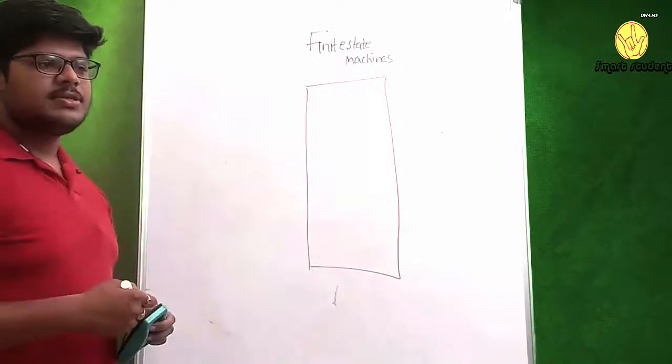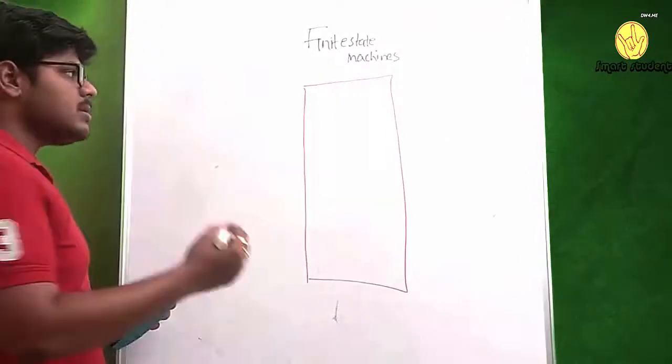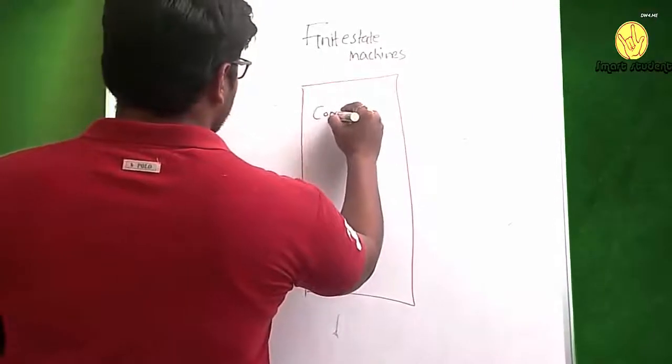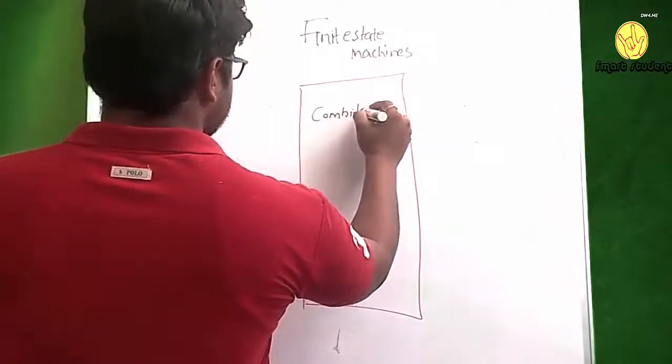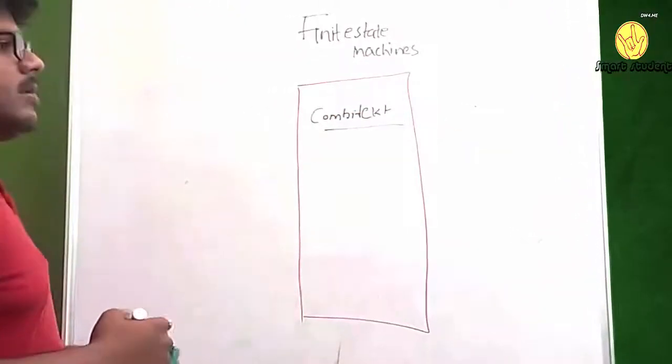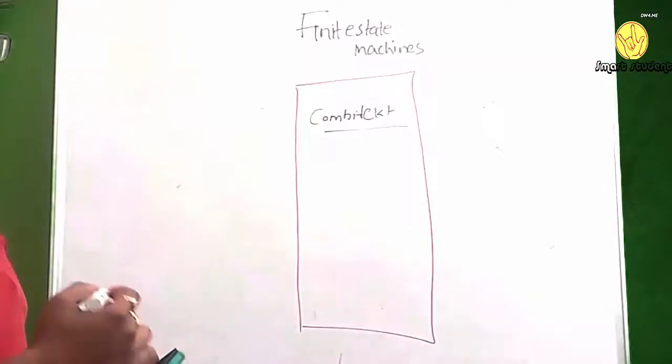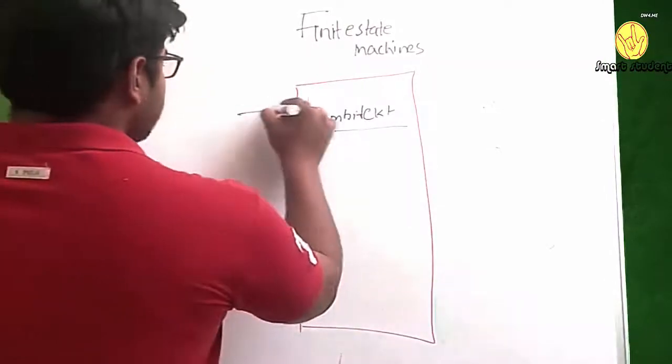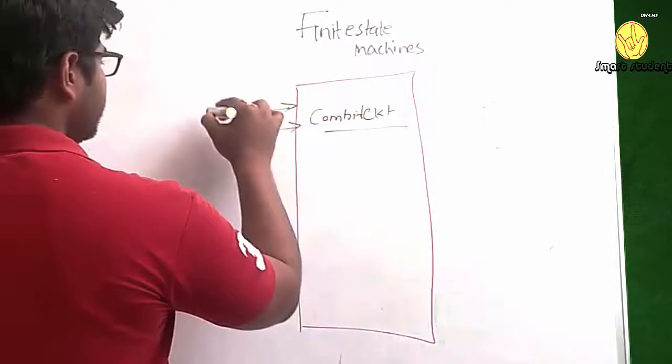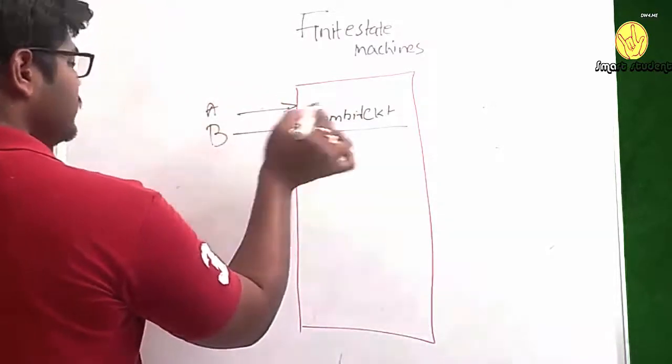Now let us see the finite state machine generalized diagram. The finite state machine, as we said, has to be a sequential circuit. There is also some combinational component or combinational circuit that is present. For this finite state machine diagram, we will give external inputs, say A, B, and so on.